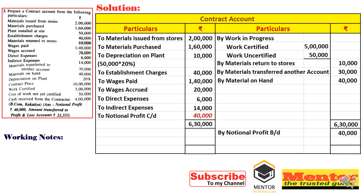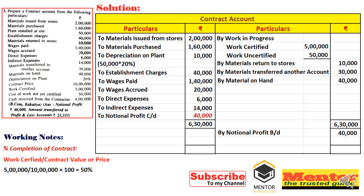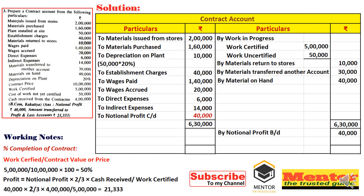Completion of contract = work certified / contract price = 5,00,000 / 10,00,000 × 100 = 50%, which is exactly 50%. Since 50% and above, the formula is NP × 2/3 × CR/WC. Applying: 40,000 × 2/3 × CR/WC = 21,333 transferred to P&L account. Balancing figure of 18,667 goes to work in progress reserve.